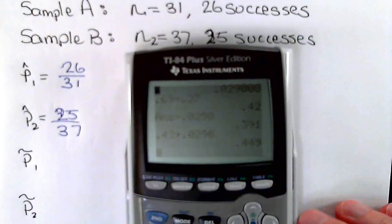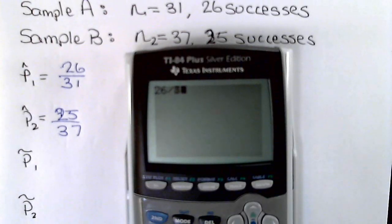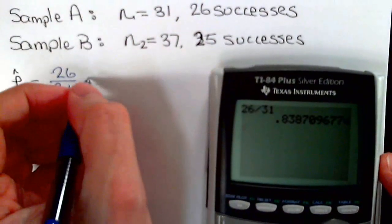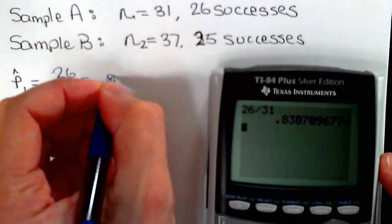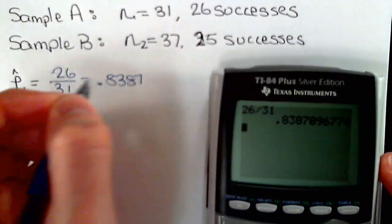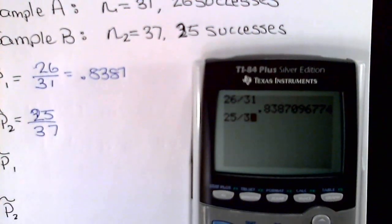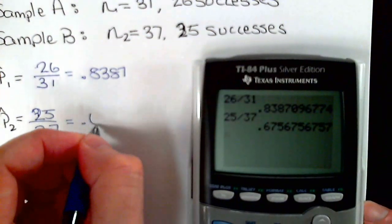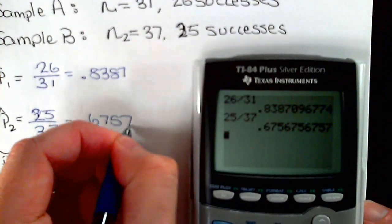Using the calculator, we get sample proportion: 26 divided by 31 equals 0.8387, and 25 divided by 37 equals 0.6757.